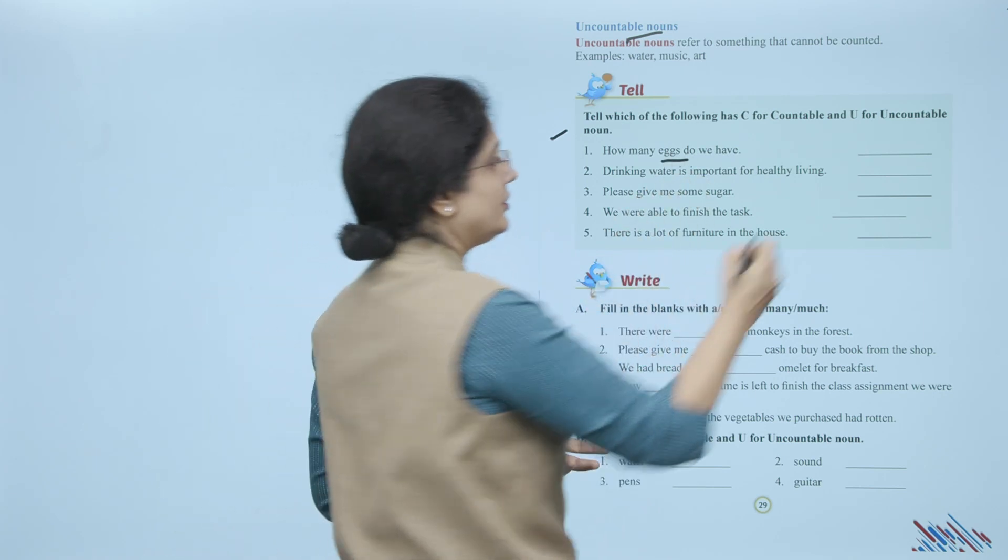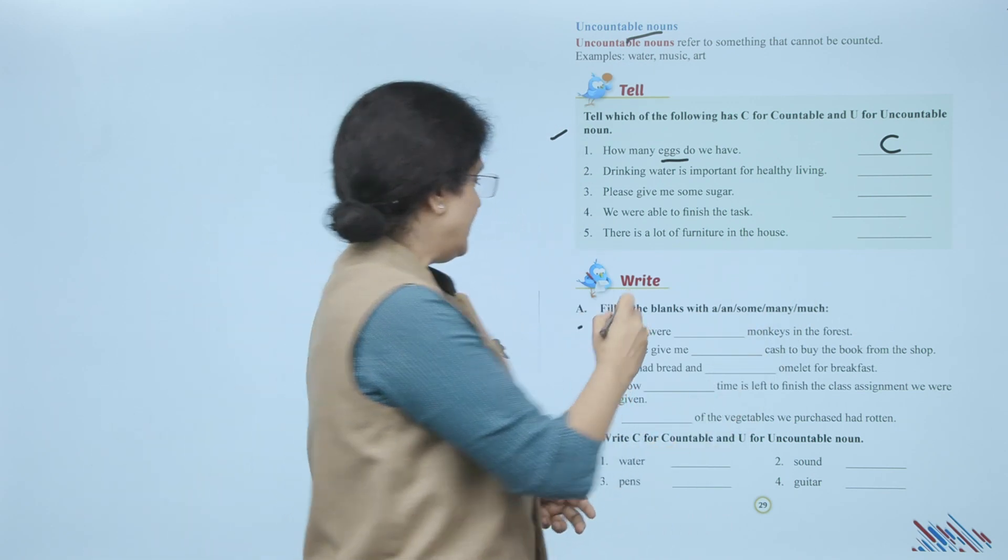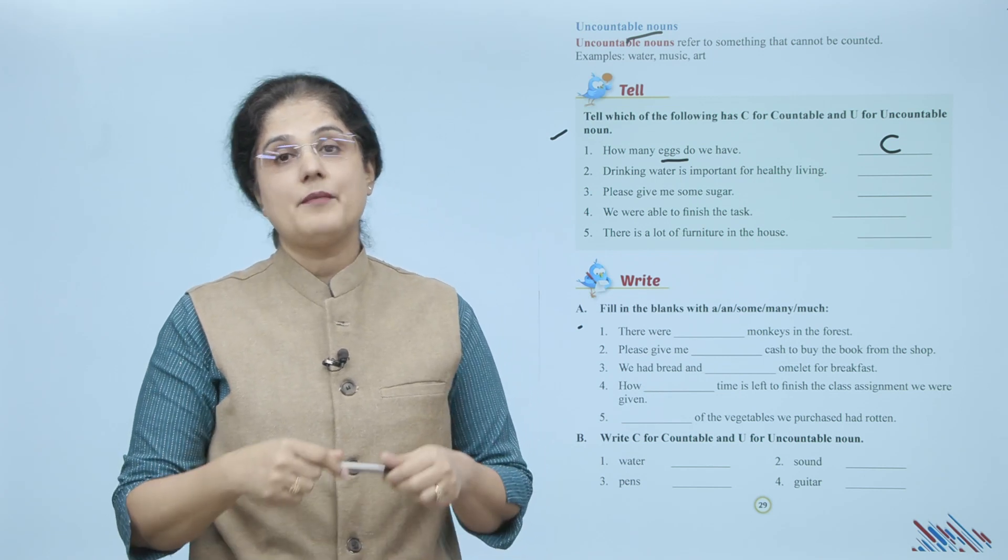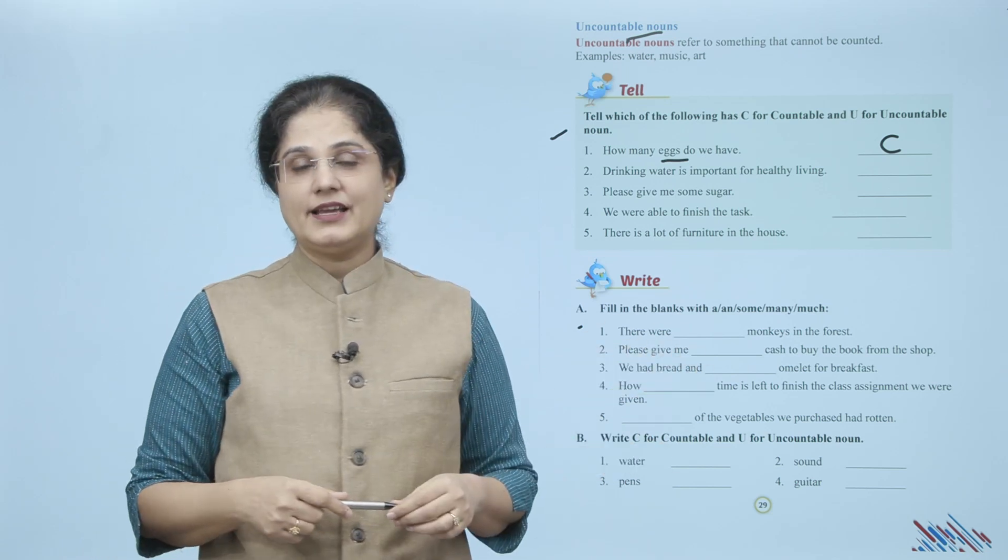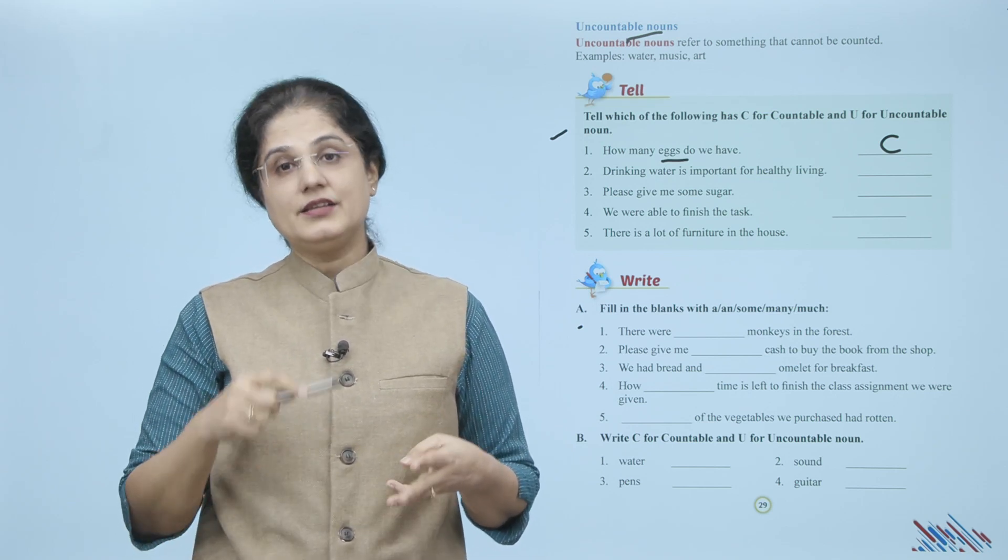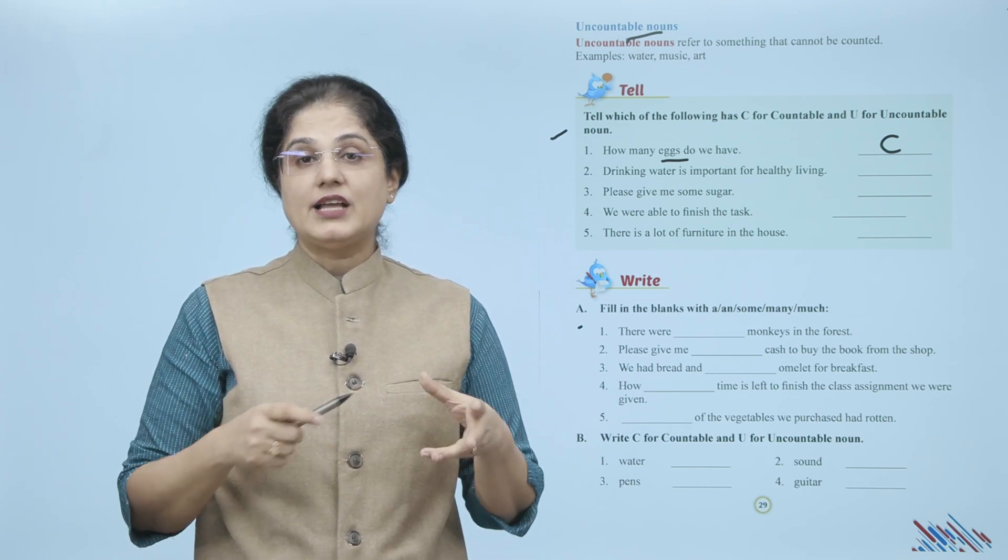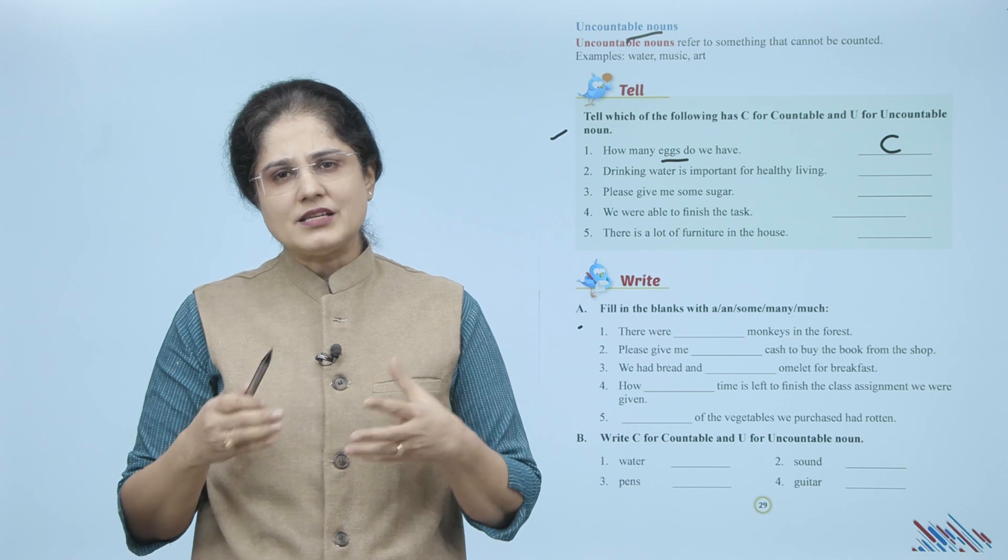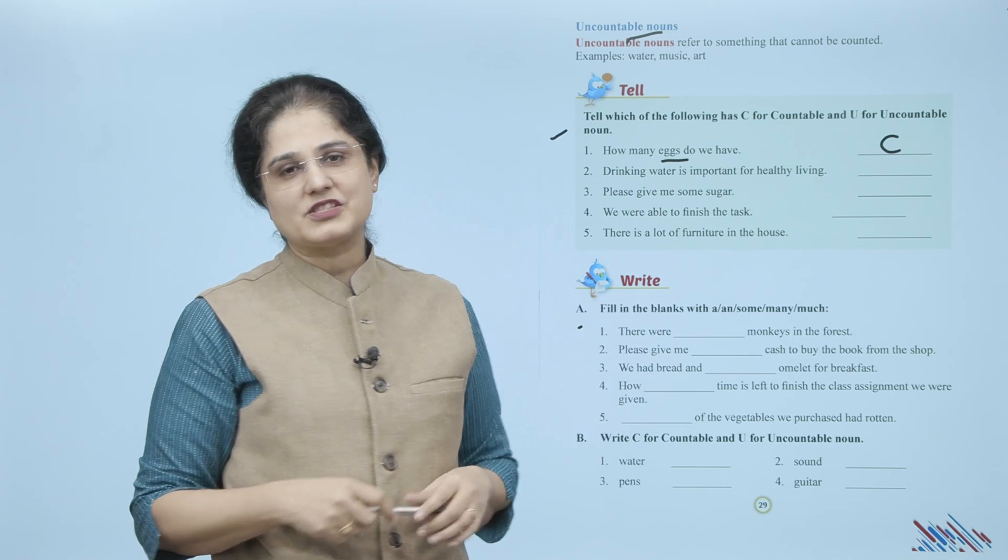Now let's write. If you look at this exercise: fill in the blanks with a, an, some, many, or much. Sentences mein jo blanks diye gaye hain aap wahan pe dekhen ki aapka a aayega ya phir an aayega, ya some aayega, ya many, ya phir much. For example, first sentence kya hai: 'There were blank monkeys in the forest.' Toh yahan kya appropriate aayega? There were some monkeys ya phir many monkeys in the forest. Isi tarah se aap baaki blanks bhi fill karein.